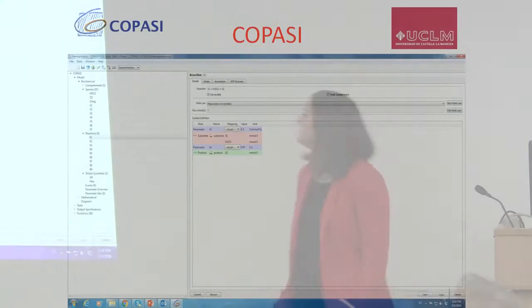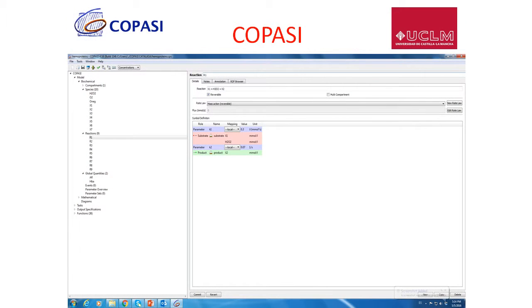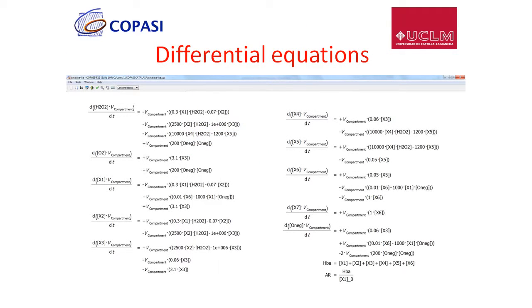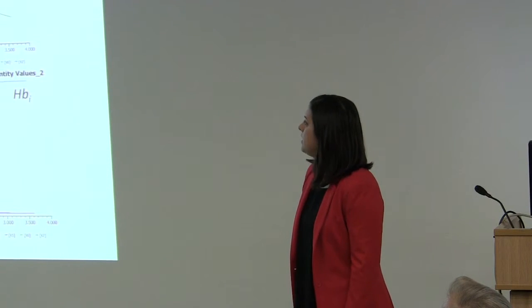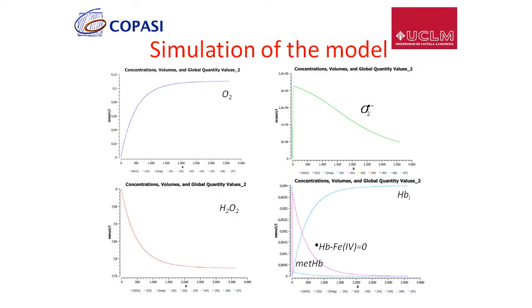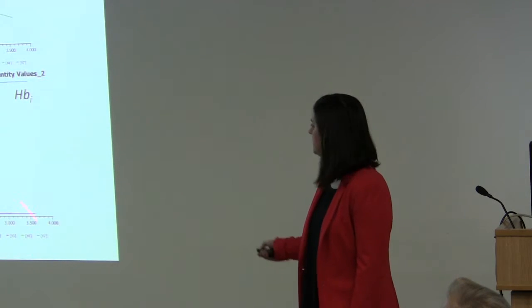We simulated this model using computer software, introducing the kinetic parameters, concentrations, reactions, and everything needed. This gives us a system of differential equations. Here you have some examples of compounds involved in the model: the progression of oxygen, the production and consumption of superoxide radical, the consumption of hydrogen peroxide, and some enzymatic intermediates.